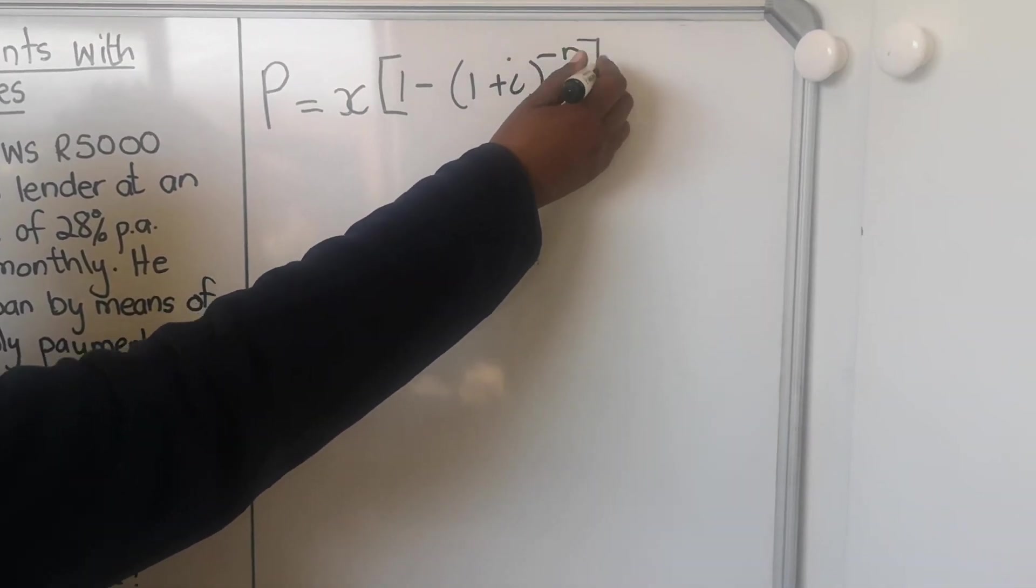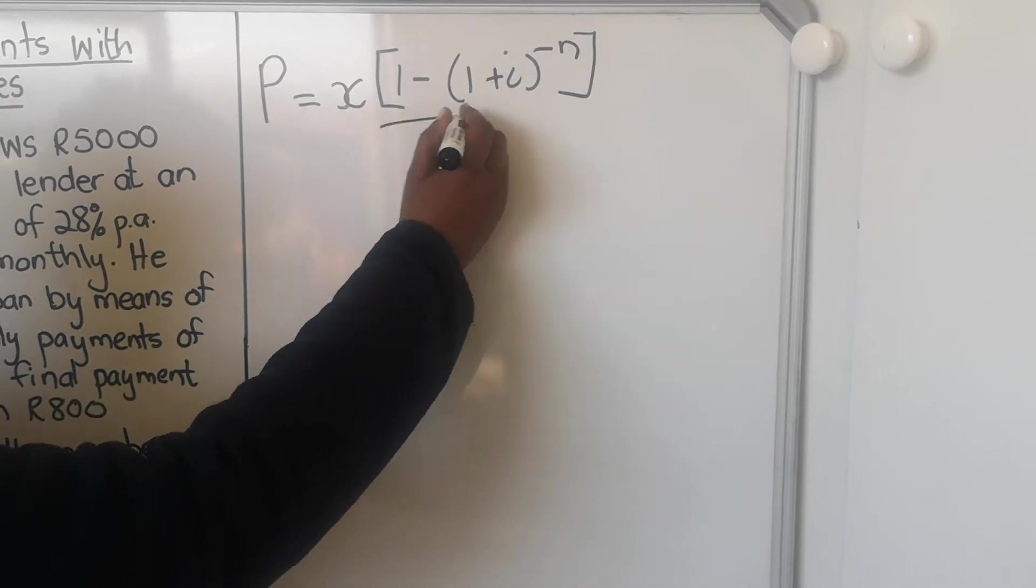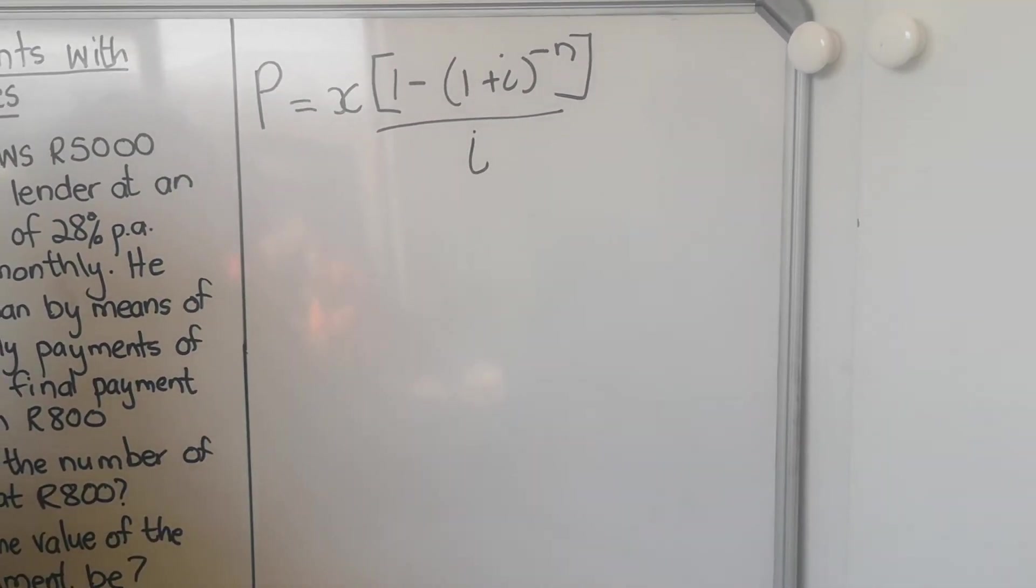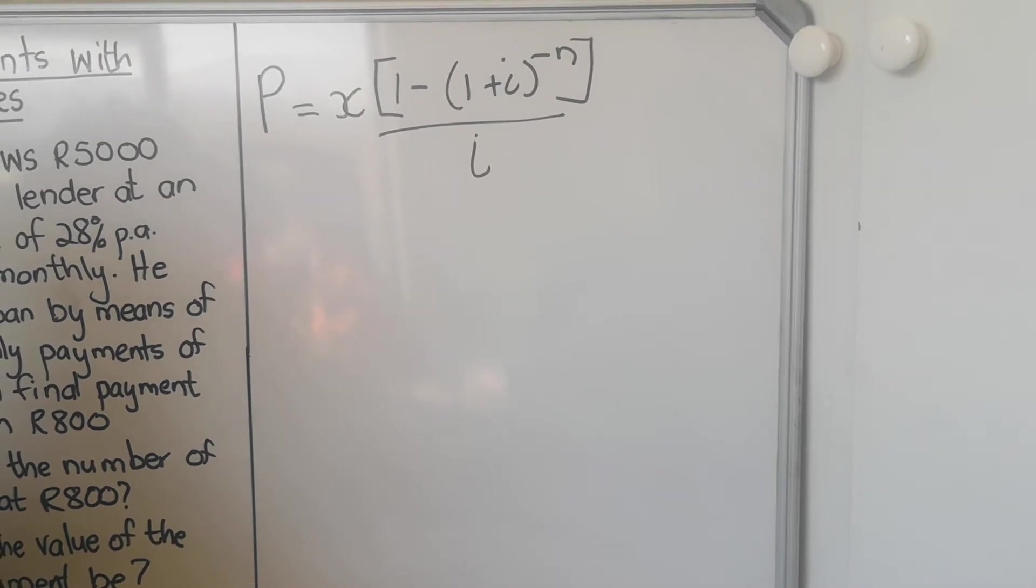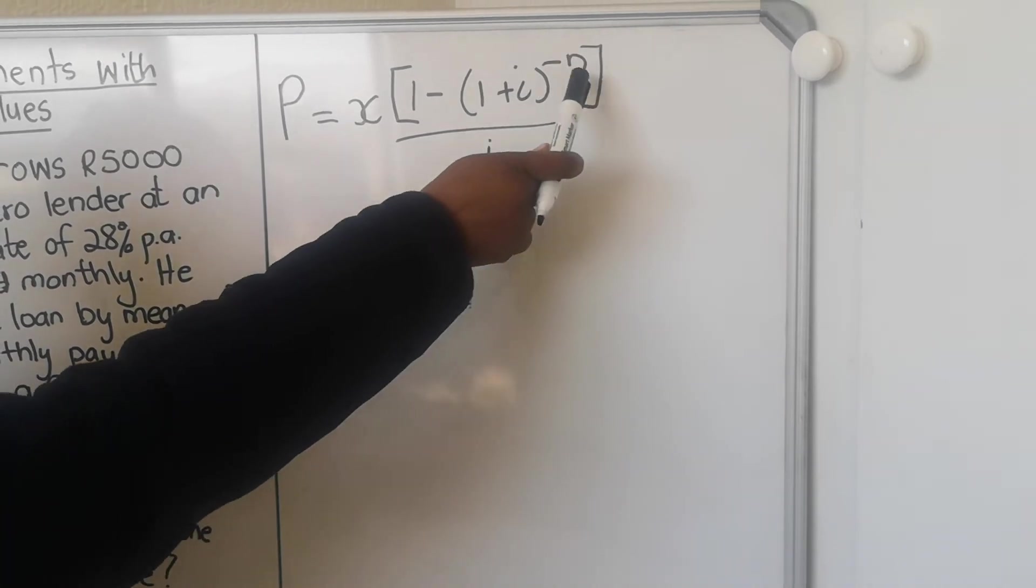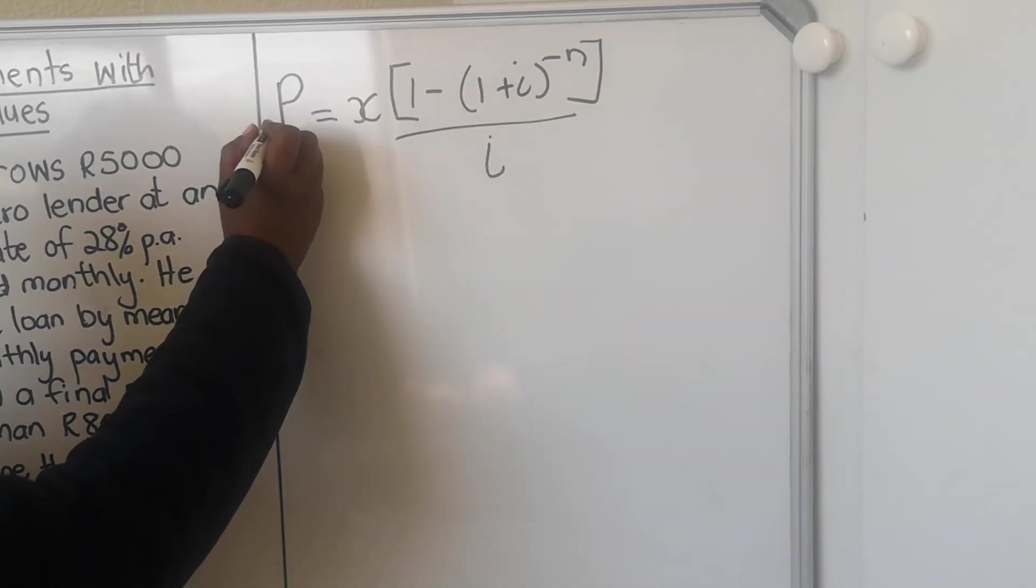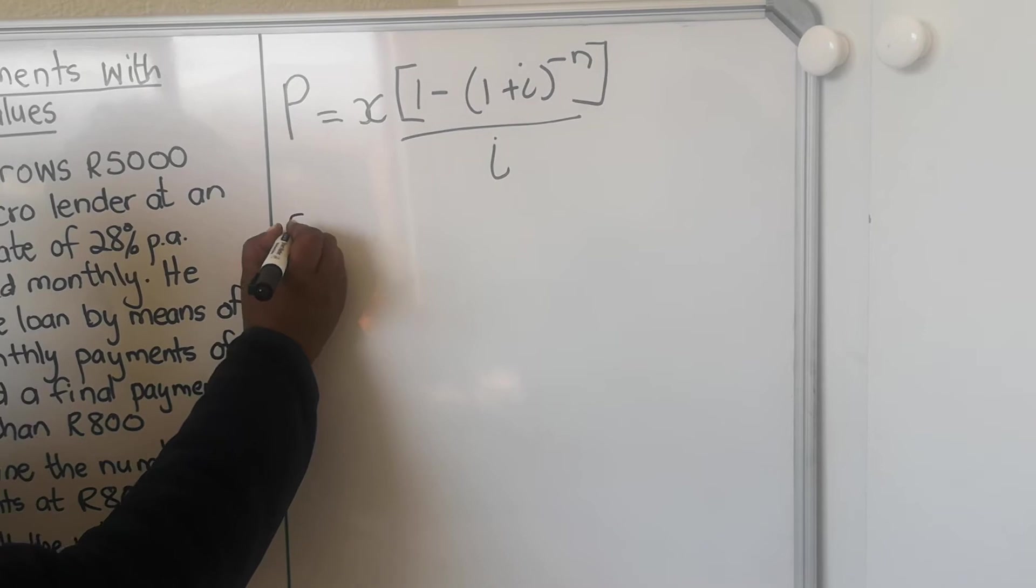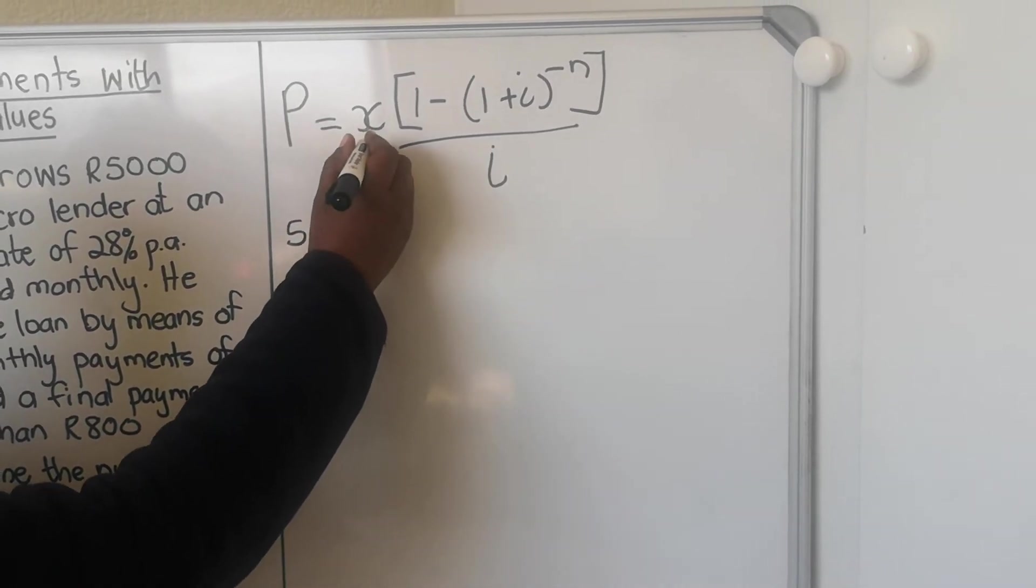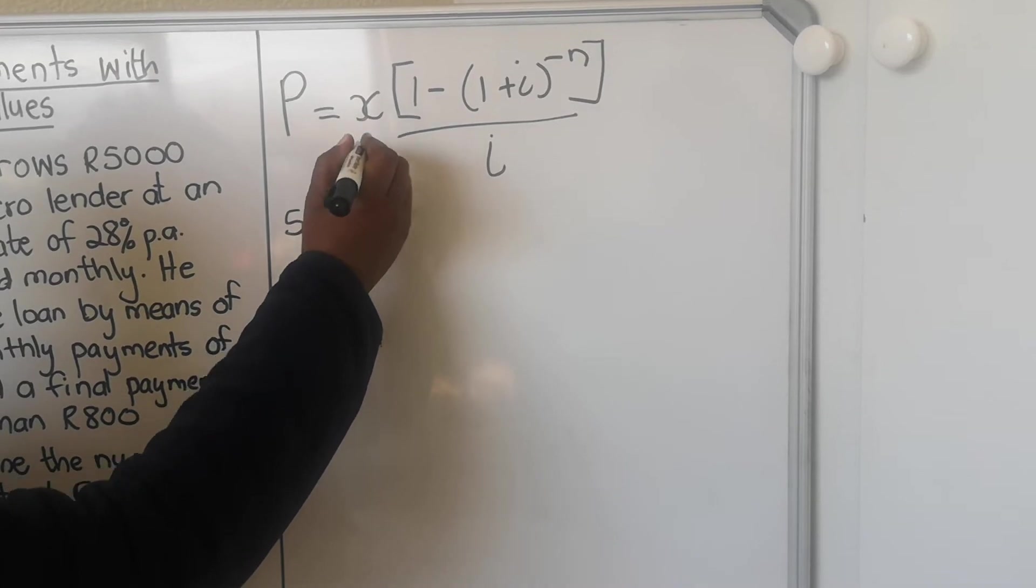Don't forget the minus for the present value formula - usually the numerator will have that. Now they are asking us how many R800 payments will he make, so it means they want n. How much money did he take? It's R5000. How much are the monthly payments? R800.